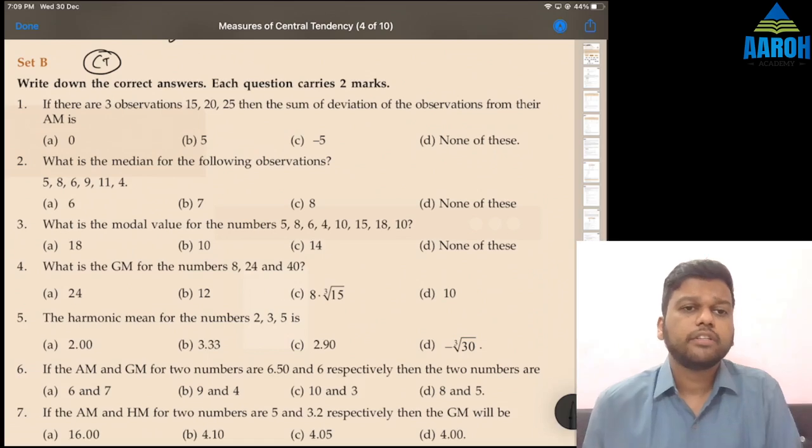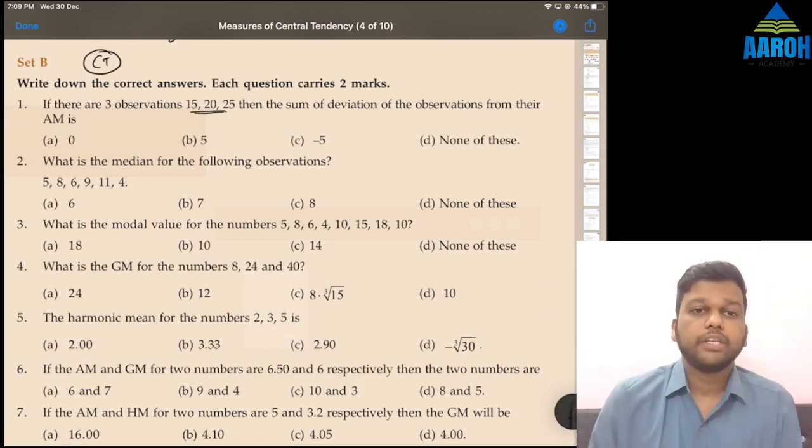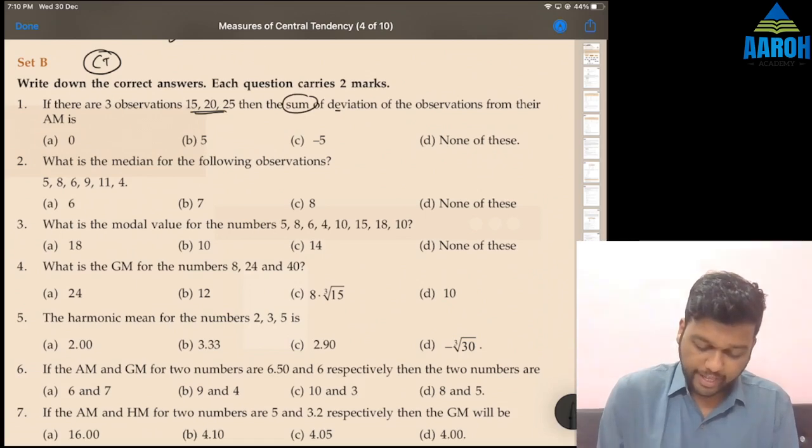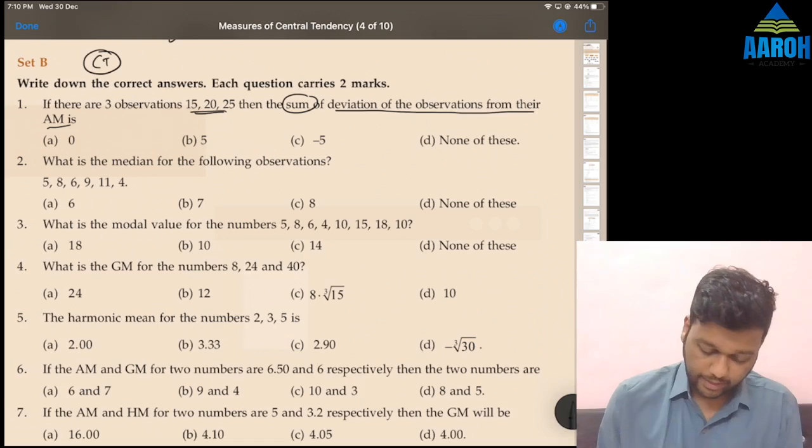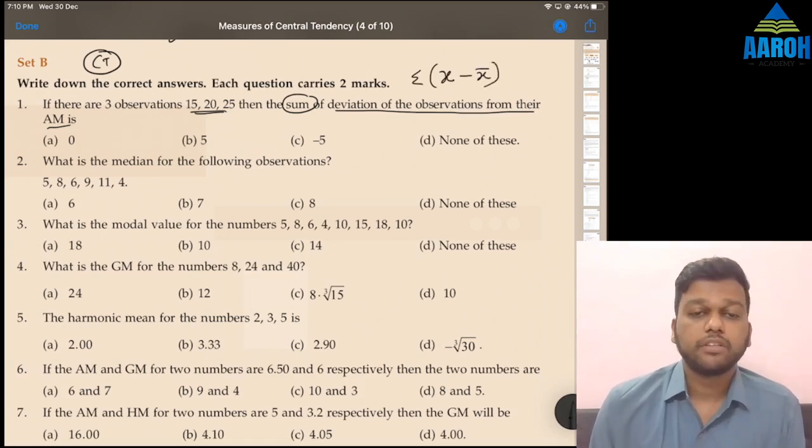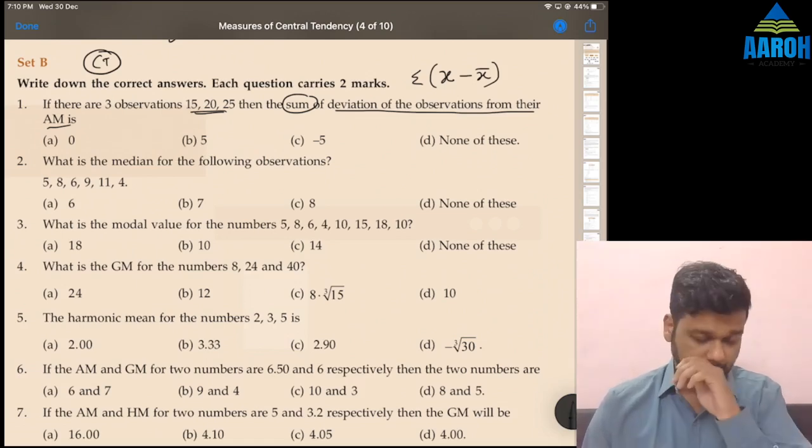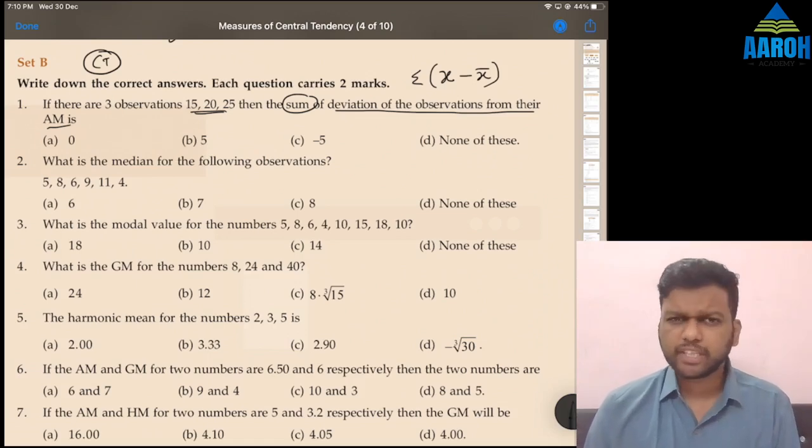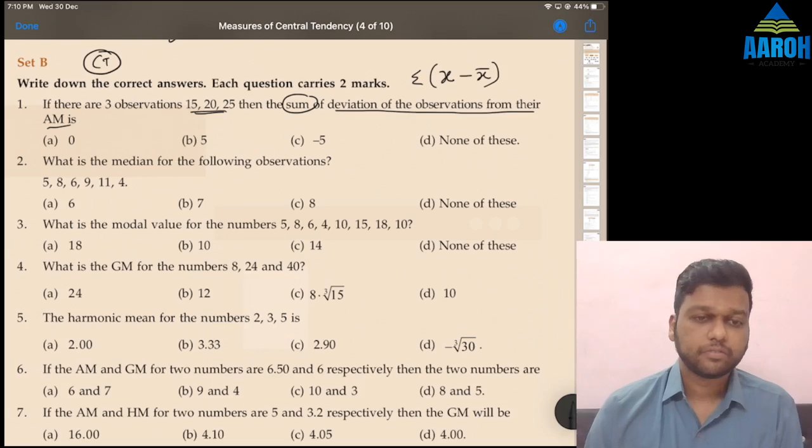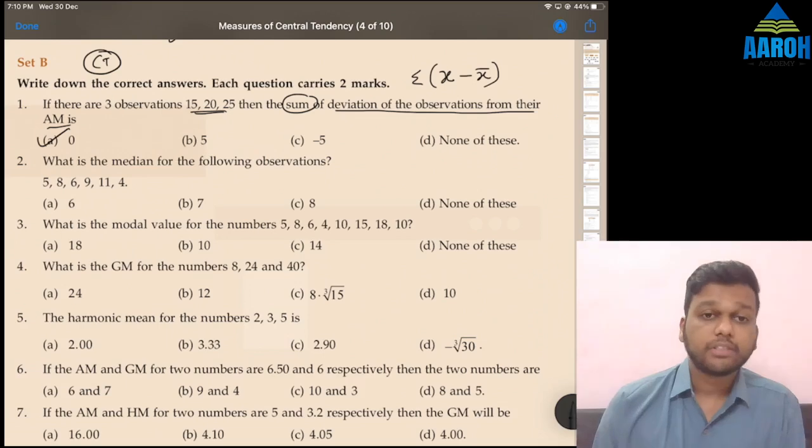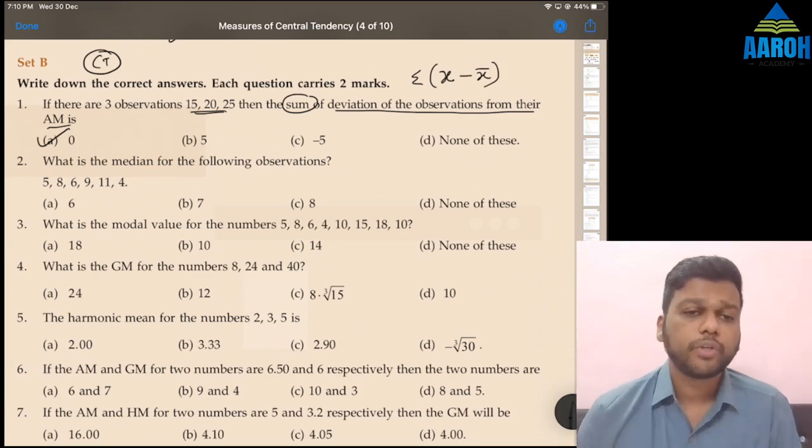If there are three observations, 15, 20 and 25, then sum of deviations of observations from their arithmetic mean. That is, summation of X minus X bar. This is a property. What is summation X minus X bar always? Zero. Correct. Summation X minus X bar is always zero. So we don't need to calculate this.